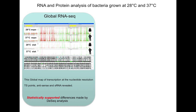RNA-seq is absolutely fantastic and I'd definitely recommend it. It gives you a global map of all transcription — small regulatory RNAs, antisense transcripts you wouldn't normally see, transcription start points, differential operon regulation. You can use a program called DESeq, which will compare any open reading frame between different conditions and give you statistically supported differences, so you can get really good comparative statistical data.